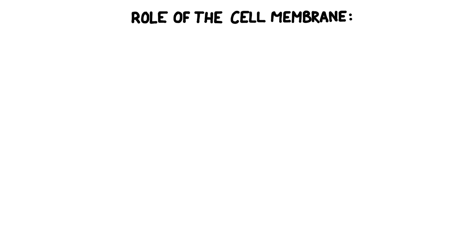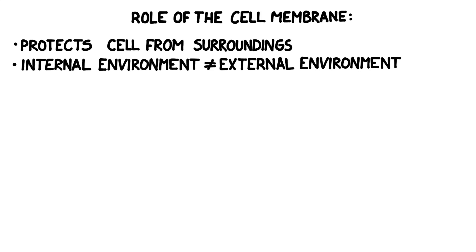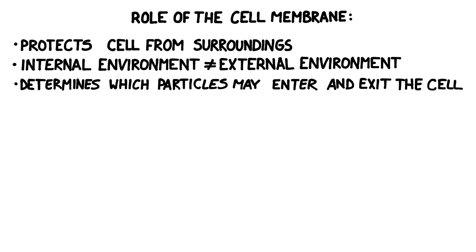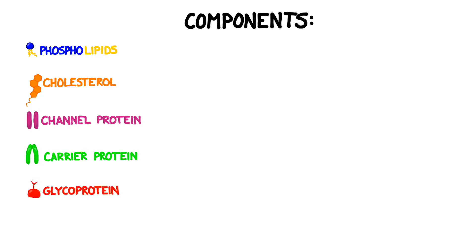The cell membrane has several major roles. It protects the cell from its surroundings, maintains an internal environment that is different from its external environment, and determines which particles may enter or exit the cell. It has many components that allow it to perform all of these functions. These include phospholipids, cholesterol, channel proteins, carrier proteins, glycoproteins, and peripheral proteins. The membrane they create is both fluid and selectively permeable.